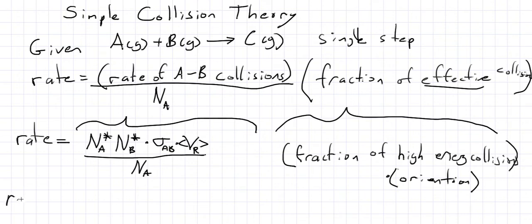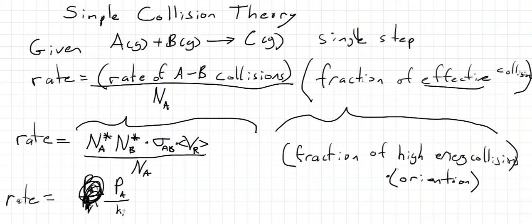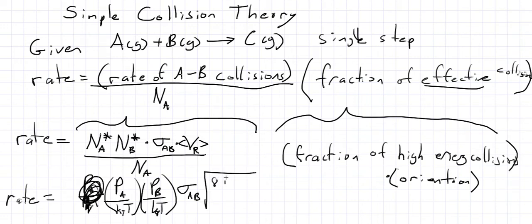Let's go ahead and develop this a little further. The rate should be equal to — for ideal gases, the number density is just going to be the partial pressure of that gas divided by kT. So we have the partial pressure of A divided by kT, times the partial pressure of B divided by kT, times the collision cross section, times the relative speed which is (8kT / (π·μ)), where μ is the reduced mass of the two molecules (not a mole of molecules). Then we divide that whole thing by Avogadro's number.